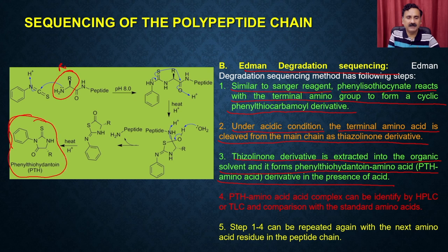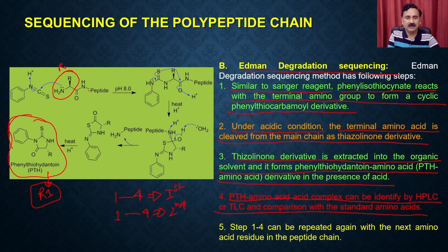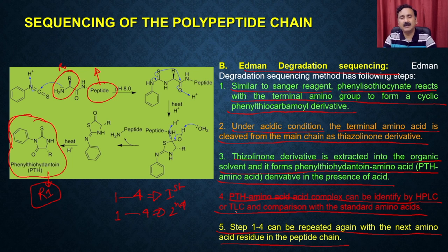The PTH amino acid complex can be identified by HPLC or TLC compared to standard amino acids. Once steps 1 to 4 are done for the first amino acid, the remaining peptide chain is still there, and you repeat the process for the second amino acid. By continuing this procedure, it keeps giving you the amino acid sequence from the N-terminus side. Steps 1 to 4 can be repeated for each subsequent amino acid in the polypeptide chain, giving the whole sequence. When different fragments are put together, it gives the complete sequence.